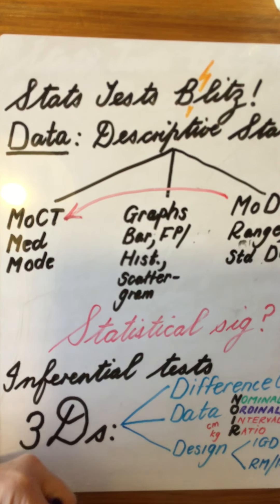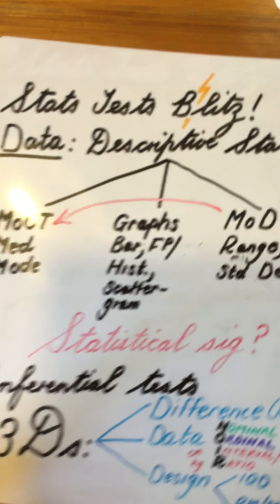The thing about matched pairs is that it's really the same as repeated measures, because we match people on variables that are relevant and appropriate for whatever investigation we are conducting.